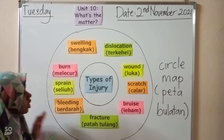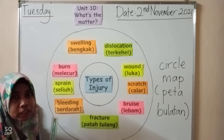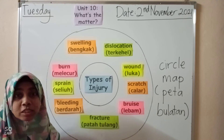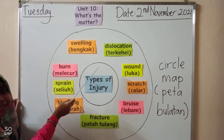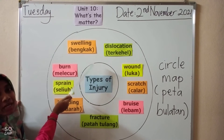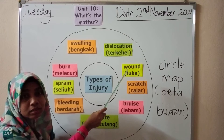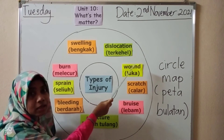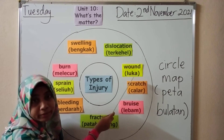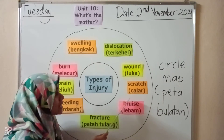The second part, we are going to enrich our vocabulary on the types of injury — jenis-jenis kecederaan. Swelling — bengkak. Dislocation — terkehel. Wound — luka. Scratch — calar.